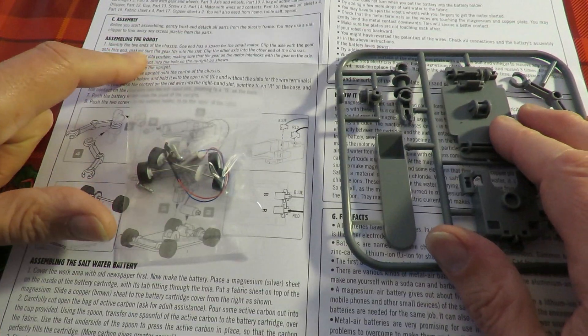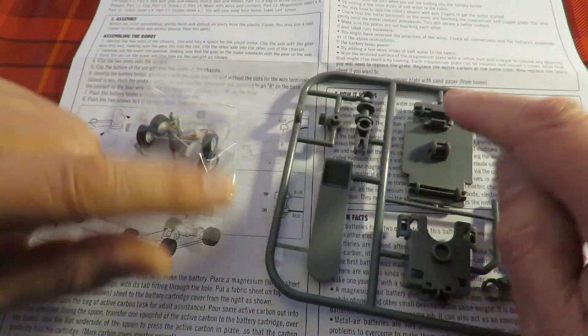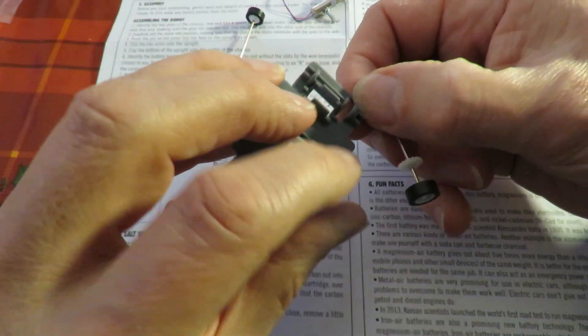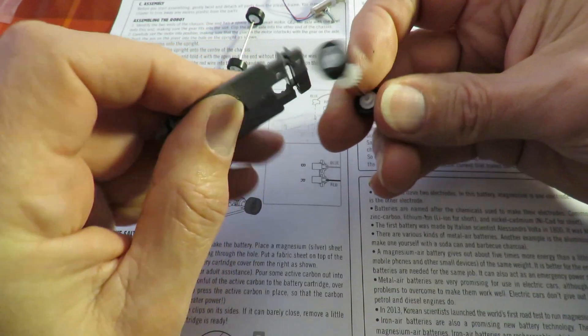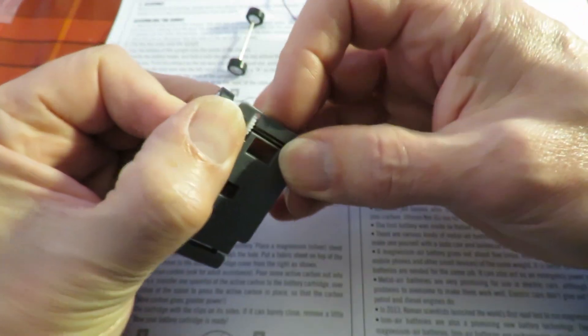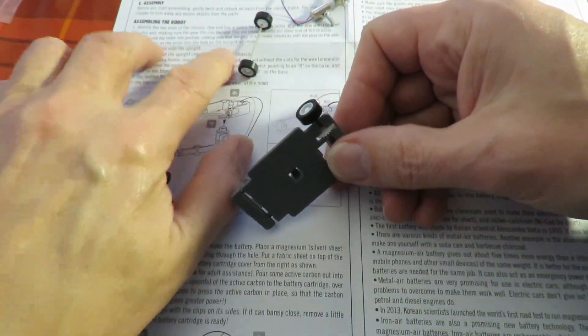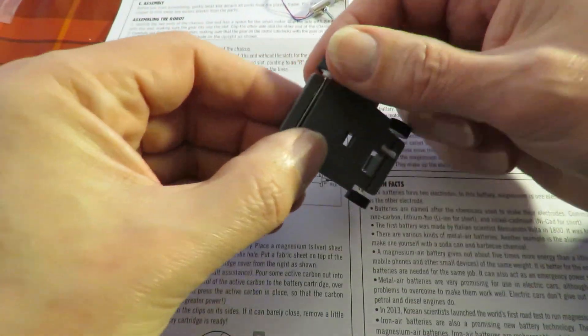Right, identify the two ends of the chassis. One end has a space for the small motor. That's that. So this is the chassis. That's the space for the motor. There's a little gap for the gear. So there's only one place that can go. So that's there. Clip the other axle to the other end. Yep, I think we can work that out.